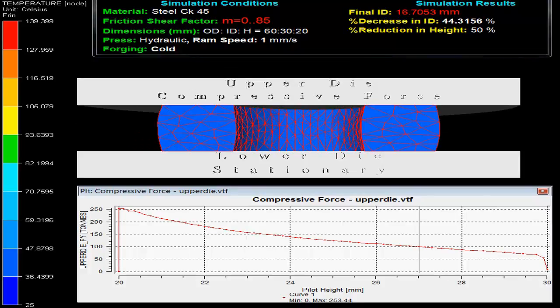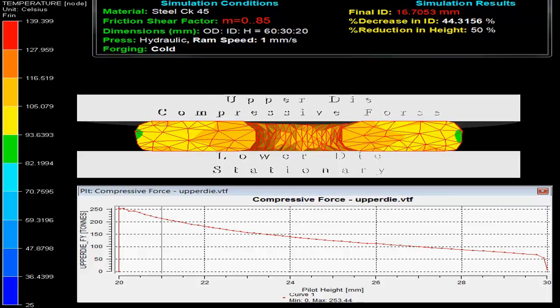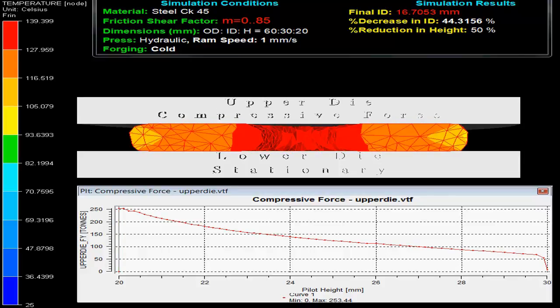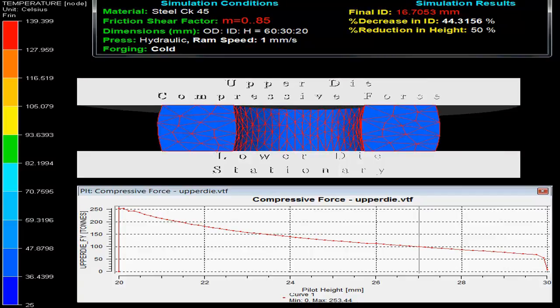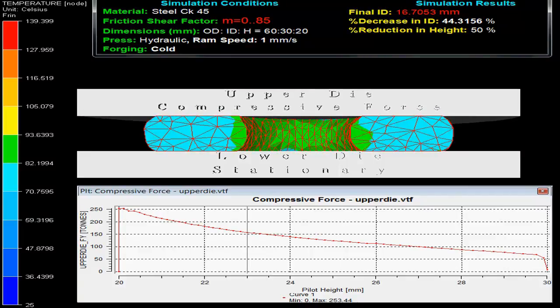At the bottom, the graph between force on upper die versus pile height ratio and the temperature evolution during the process can be compared with the help of the scale given on the left.